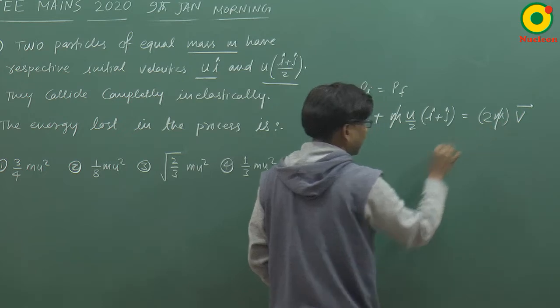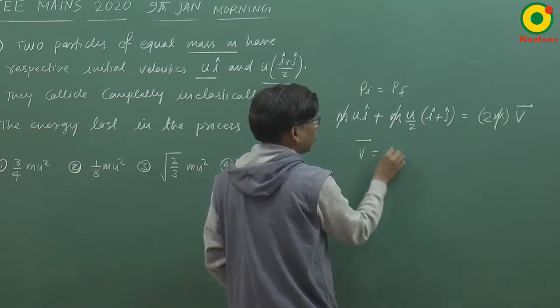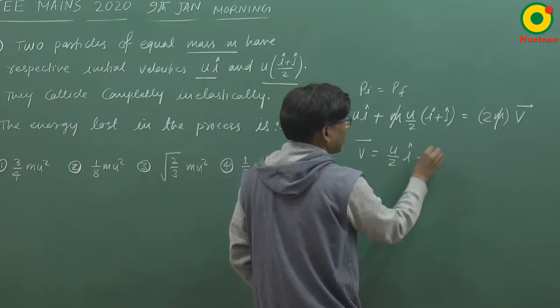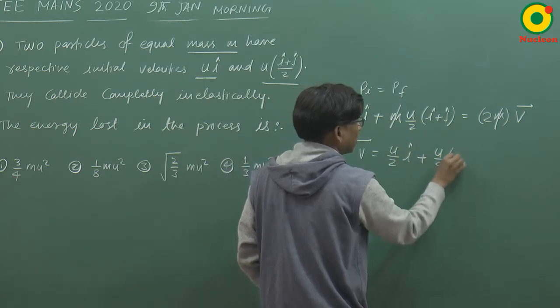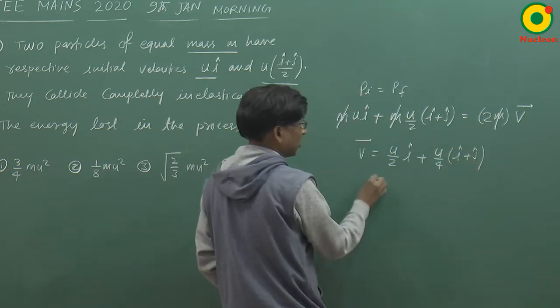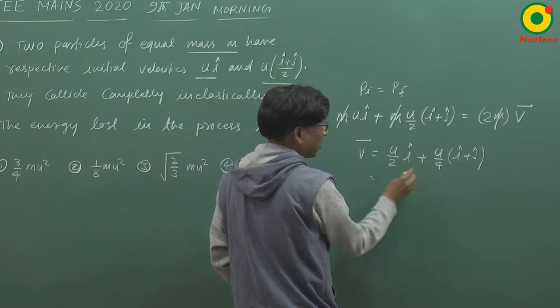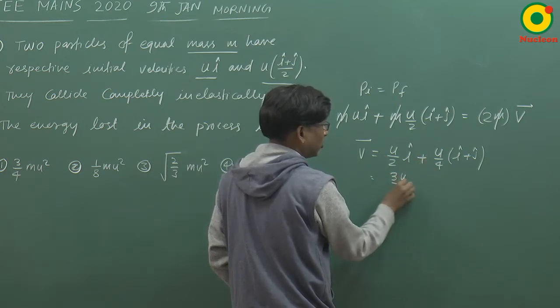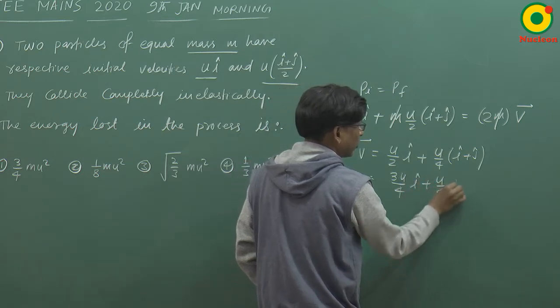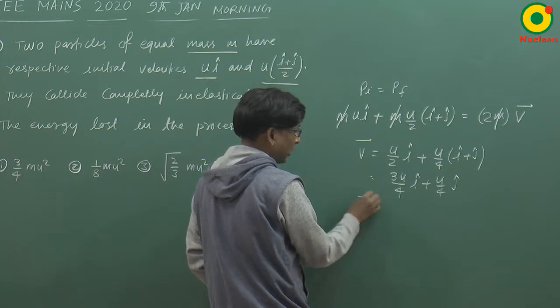From here we can find the value of v. We can cancel m, so v will be (u/2)i cap plus (u/4)i cap plus j cap. So if we add u/2 and u/4, this becomes (3u/4)i cap plus (u/4)j cap.